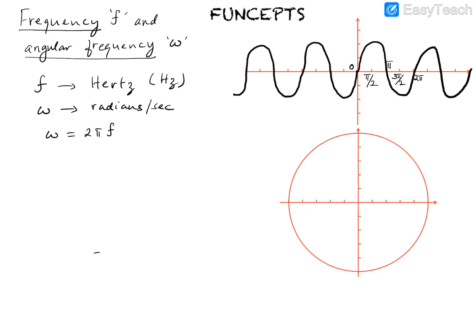To illustrate this, we have the sinusoidal waveform, which is a periodic waveform. One complete cycle of the sinusoidal waveform covers an angle from zero to pi over two, to pi, to three pi over two, and to two pi. The time taken to complete one cycle is called the time period.